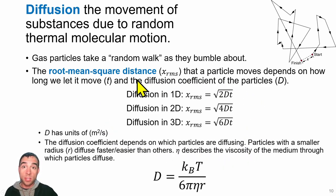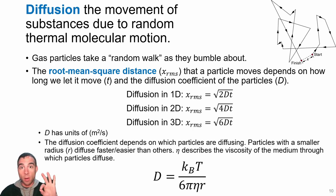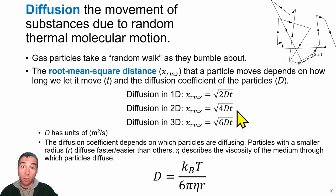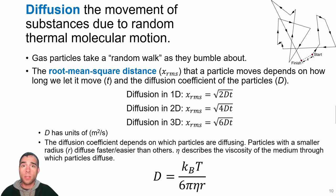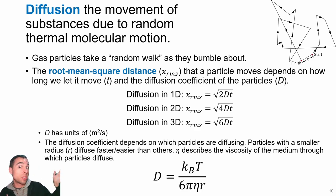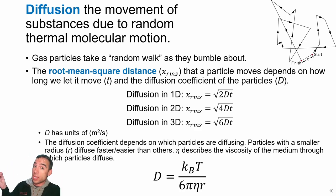The equations for expected distance over time depend on dimensions: for one-dimensional motion use the top equation, for two-dimensional motion use the middle, and for three-dimensional motion use the bottom equation. The diffusion coefficient has units of meters squared per second — larger particles diffuse more slowly. A practical example: spraying perfume on one end of a room causes those gas particles to diffuse throughout, eventually reaching the other side due to the random motion of the particles.